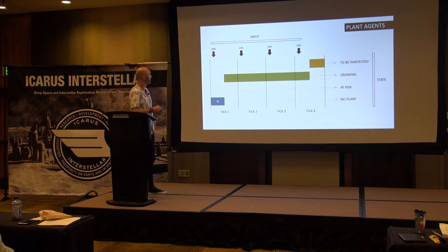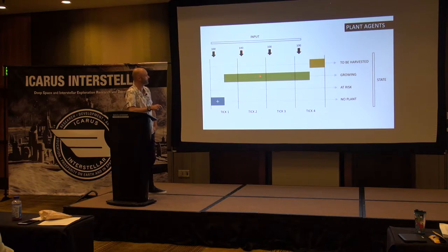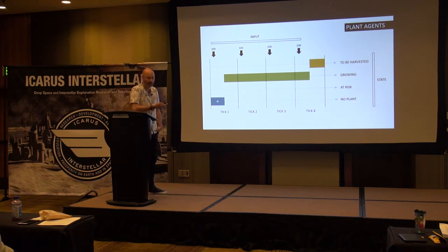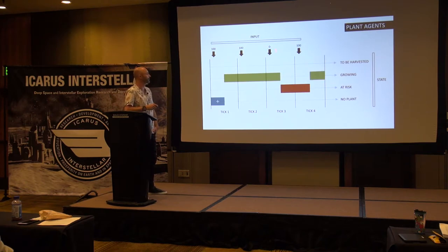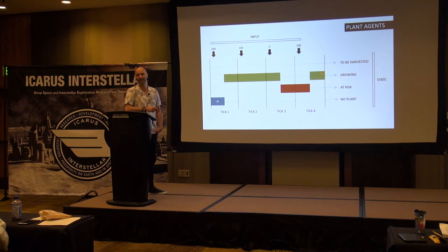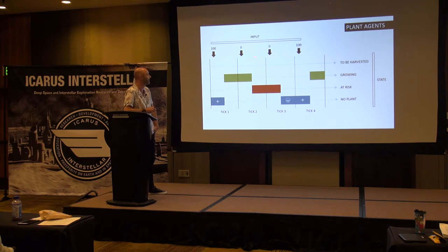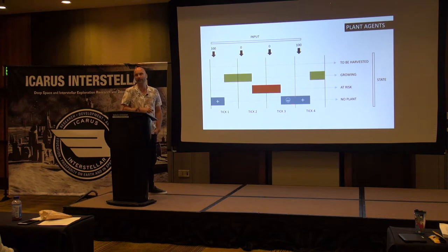Agent-based modeling works with ticks — like a ticking clock, so every tick something happens. For example: in tick one the seed gets some nutrients and at the end of the tick it's a full-grown plant; the next tick it gets nutrients and it's still a full-grown plant; and after a number of nutrition cycles it gets into the state where it's ready to be harvested. You can also define what happens if there's not enough nutrients — we put the plant at risk, but if it gets nutrients again it starts growing. If there is no food twice in a row, the plant dies and needs to be seeded again.